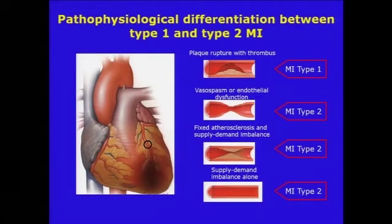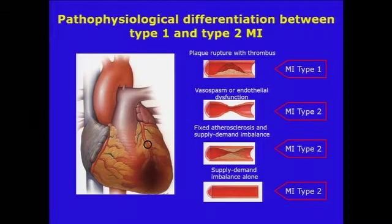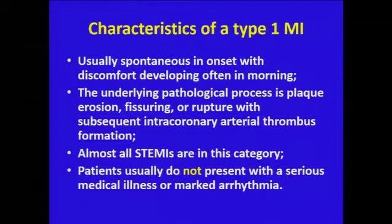This diagram illustrates that exactly. Type 1 MI shows a plaque rupture with thrombus. For Type 2, there are three examples: vasospasm or endothelial dysfunction, fixed atherosclerosis with a supply-demand imbalance, or angiographically normal coronaries with a supply-demand imbalance.